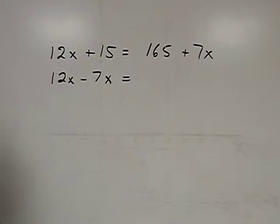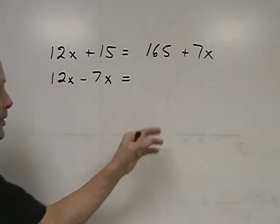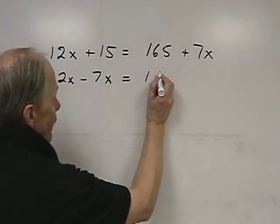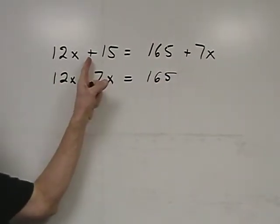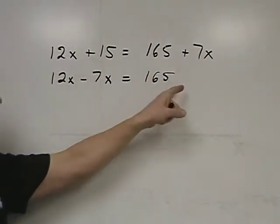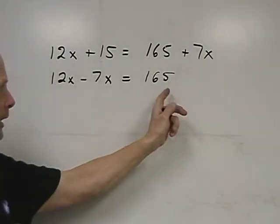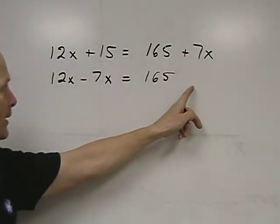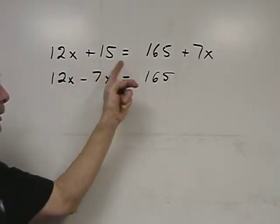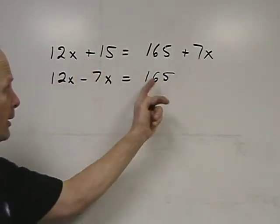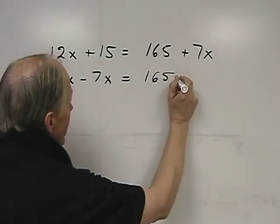And I want to collect like terms on the other side. I have 165 here. And I'm going to bring the plus 15 to the other side, which is collecting like terms on the right-hand side. Again, same rule applies. We've got a positive 15. We bring it to the other side. When we cross the equal sign border, it becomes a minus 15.